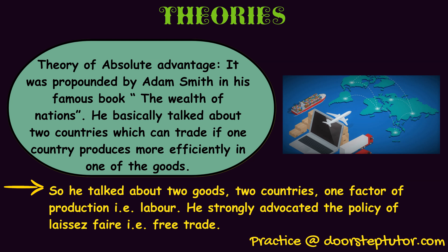Adam Smith strongly advocated the theory of laissez-faire, that is free trade. For example, if there are two countries — the US and India — and both produce cloth and machines: the US produces 8 cloths per hour while India produces 10 cloths per hour, and the US produces 20 machines per hour while India produces only 10 machines per hour. India has absolute advantage in cloth because it produces more, whereas the US has absolute advantage in machines because it produces more machines in less time.